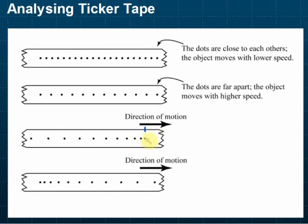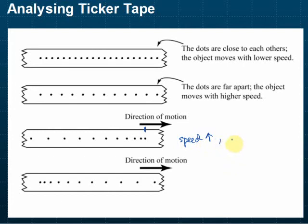From here we can see that at the beginning of the motion the dots are very close to each other, and at the end they are very far from each other. The dots getting further and further means that the speed increases. In this case, the speed increases — the object undergoes acceleration.